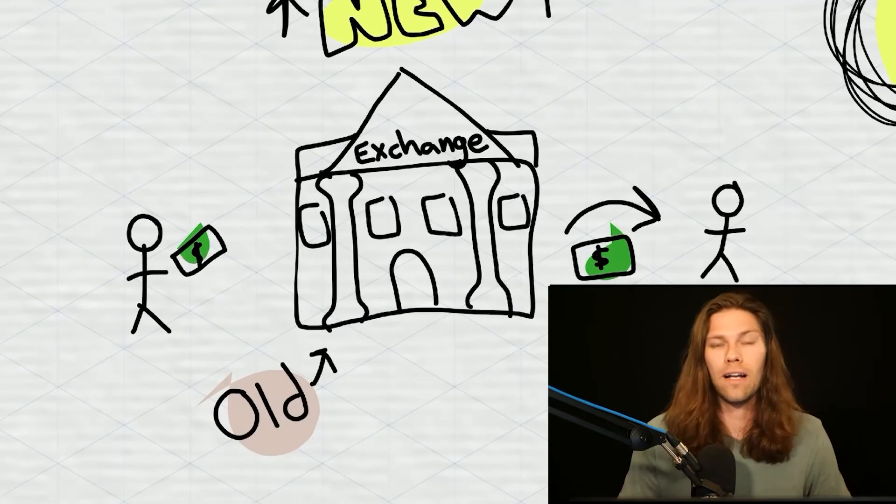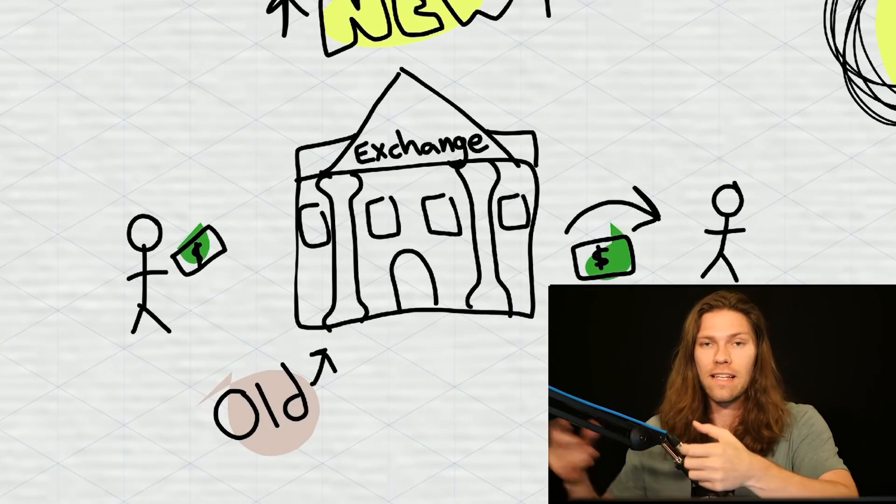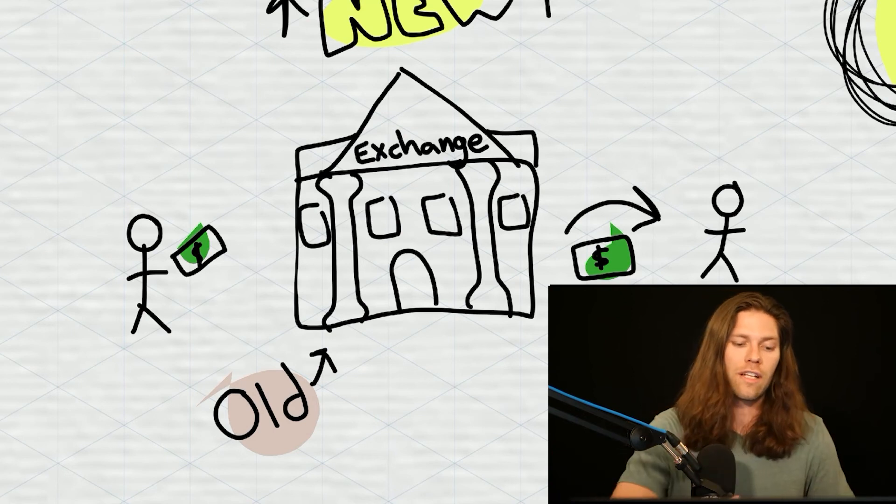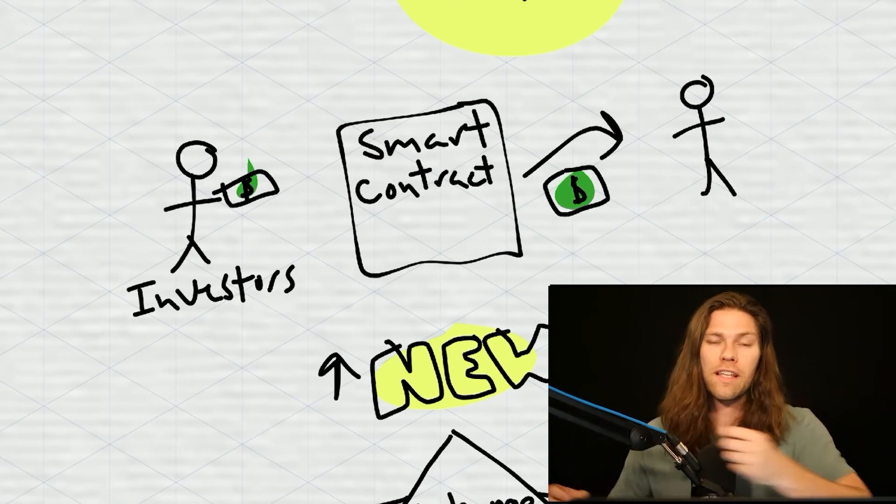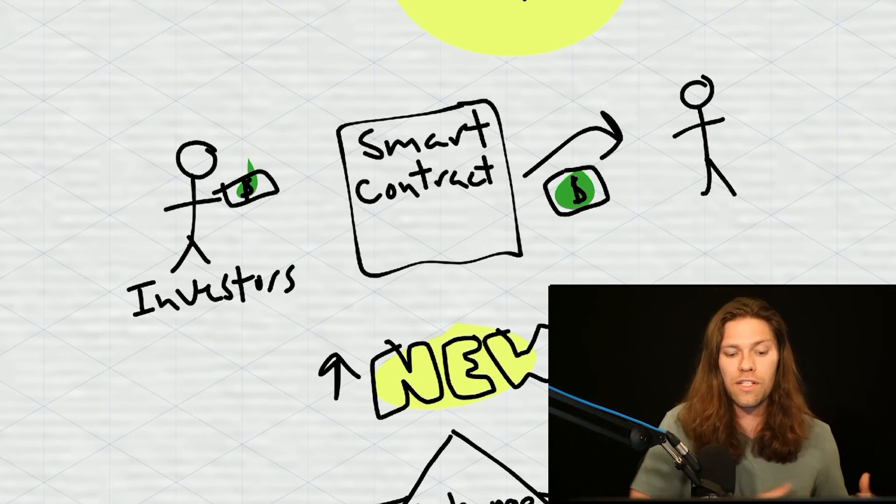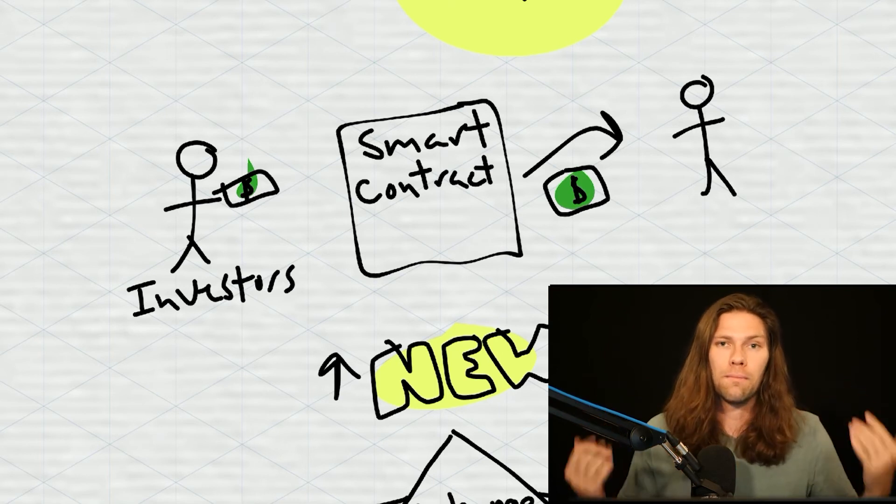So in the old way, you pay money to the exchange to facilitate the exchange of assets. They take their cut. They facilitate the exchange. In the new way, all you need are the two people involved. The person who wants to buy the stock or the cryptocurrency and the person who owns the stock or the cryptocurrency. And you just need a smart contract in the middle to facilitate the deal. And it is much cheaper.